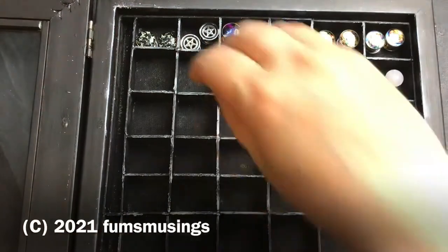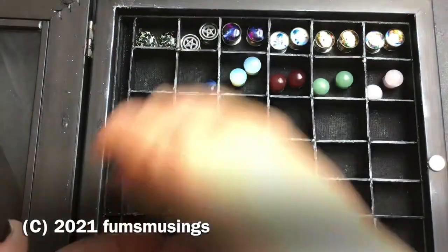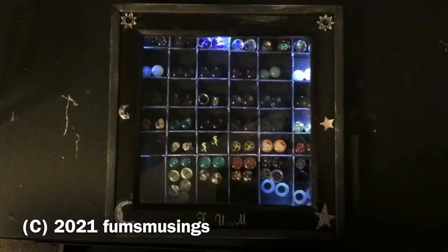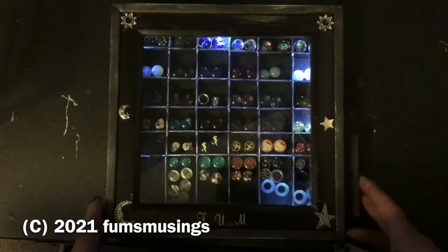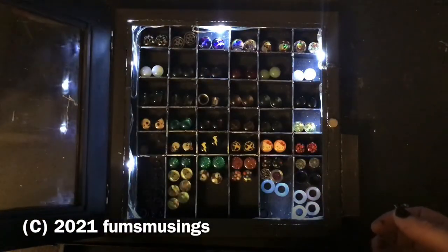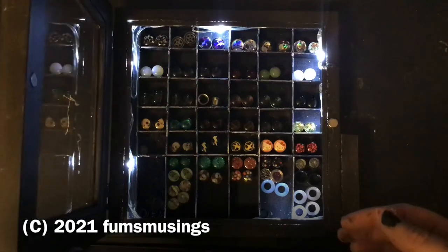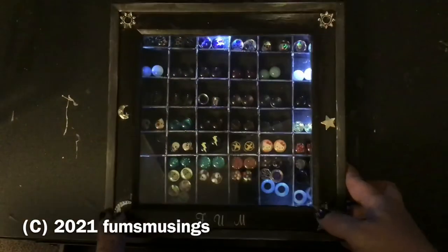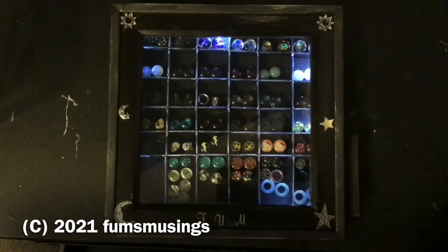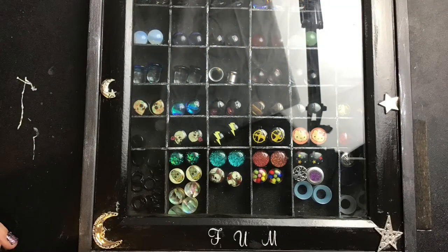Obviously you can make the dividers any size you want depending on the size of your plugs. Mine are 10 mil, so the little squares I've made are about three centimeters by two or three by three. If you've got larger plugs you'll need to make your dividers bigger. As you can see I decided to add some LEDs around the edge and box those in with another little bit of wood. That's it, hope you enjoyed the video, thanks for watching, and I'll see you in the next one.